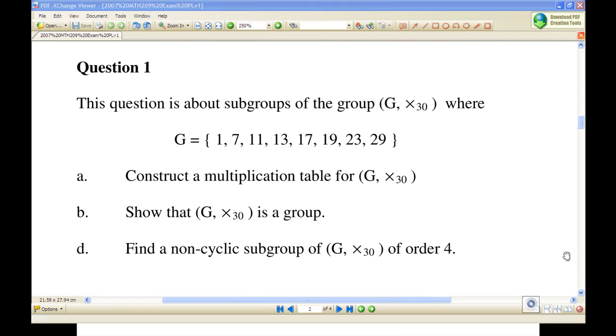Hi, for this recording we are given a set G consisting of 1, 7, 11, 13, 17, 19, 23, 29 with a binary operation multiplication modulo 30. I'm going to show you that this set together with multiplication modulo 30 is a group, and then I'm going to find a non-cyclic subgroup of order 4 from this group.